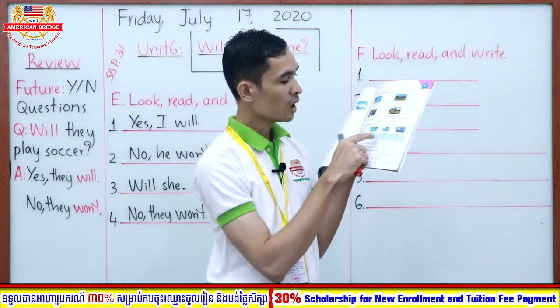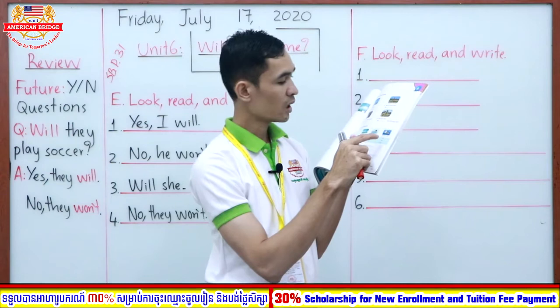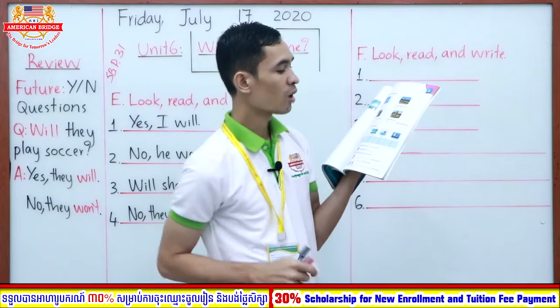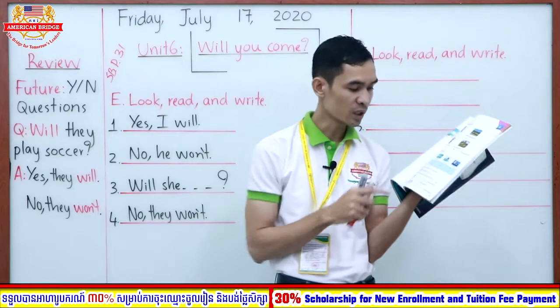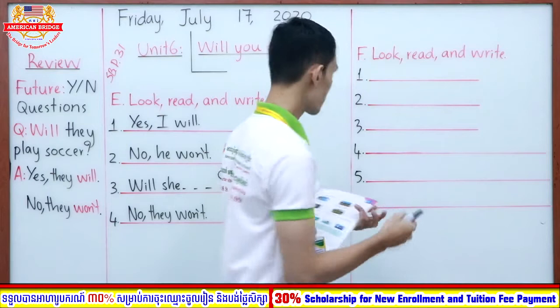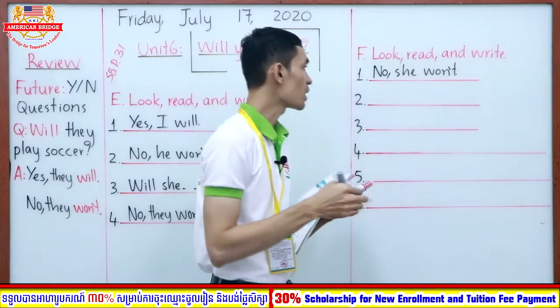Holy: swim — no. Andy: swim — yes. Cam and Clara: swim — no. Holy: watch a movie — yes. Andy: watch a movie — no. Cam and Clara: watch a movie — yes. So now you know already, right? You just look at the chart and complete. Number one, Holy: 'Will Holy go to the beach? No, she won't.' Number one is given as an example.